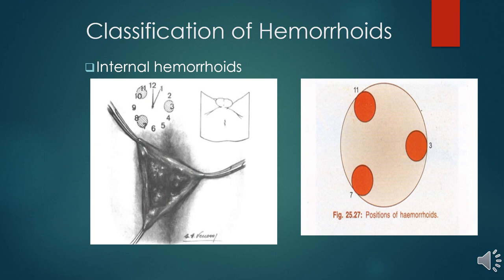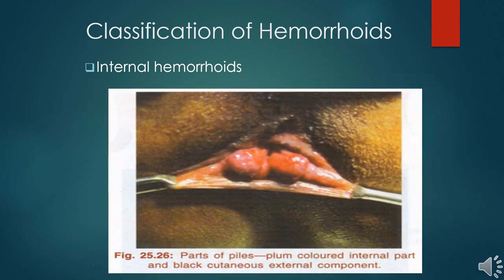The left lateral is found at three o'clock, the right anterior at ten to eleven o'clock, and the posterior one between seven and eight o'clock. A picture shows the relationship to the clock of internal hemorrhoids. On digital rectal examination you will be able to feel them in those areas. The picture also shows the plum-colored internal hemorrhoids and the black cutaneous external component.